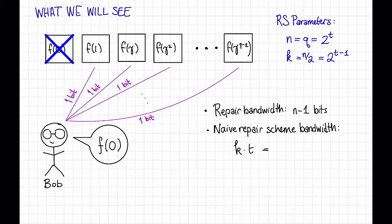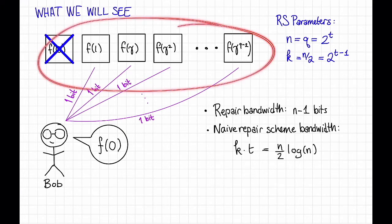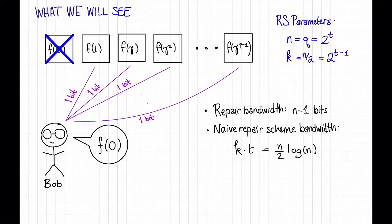In this case, k is equal to n over 2, and t is equal to log n. So what we're going to do with this scheme here is to download n minus 1 bits instead of n log n over 2 bits. So that's a savings of a factor of log n divided by 2. As n gets large, this can be significant.